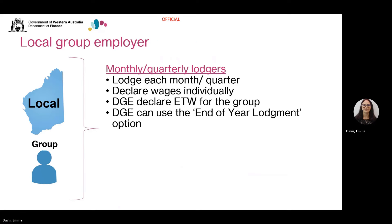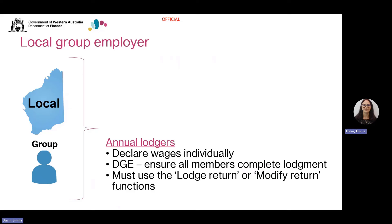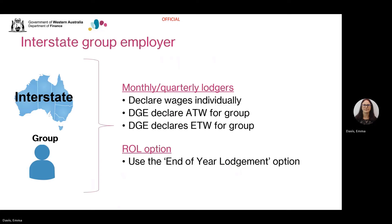If you're a member of a local group and you lodge monthly, quarterly or annually, all group members declare separately. Reconciliation will occur once all returns are lodged by all members. You are not required to submit Australian taxable wages as you only pay wages in Western Australia. However, estimated taxable wages are required to be lodged by the designated group employer if their frequency is monthly or quarterly. Designated group employers of local groups lodging monthly or quarterly are encouraged to use the End of Year Lodgement option. The designated group employer of local groups lodging annually must use the Lodge Return or Modify Return function in Revenue Online. If you're an interstate grouped business, whether you lodge monthly, quarterly or annually, each group member declares separately. All group members must lodge their returns before the designated group employer lodges the ATW or ETW on behalf of the group. Designated group employers of interstate groups lodging on a monthly or quarterly frequency are encouraged to use the End of Year Lodgement option.